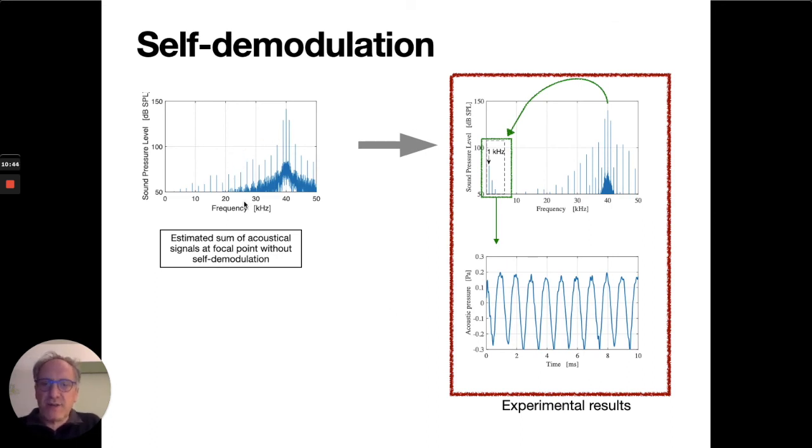Here are the experimental results measured with the microphone at the focal point. We clearly see that the initial analog signal at 1 kHz has been generated by nonlinear demodulation. Unwanted harmonic components at 2 and 3 kHz are also generated due to nonlinear interaction between sideband components around the carrier frequency.